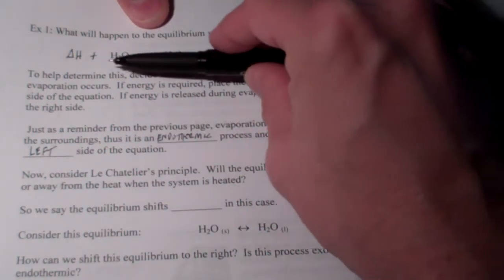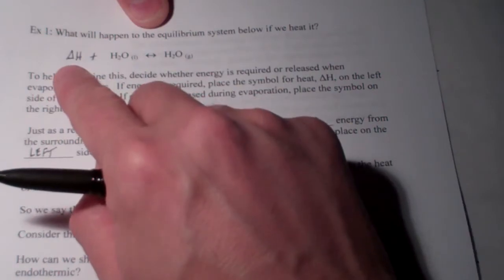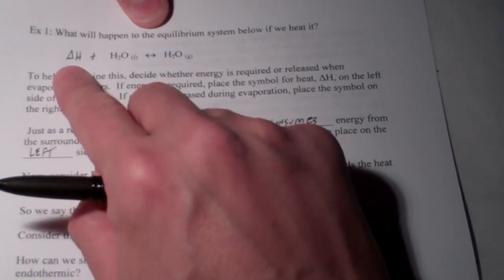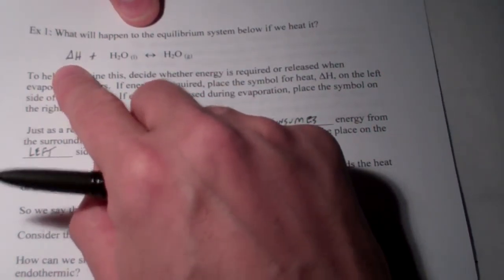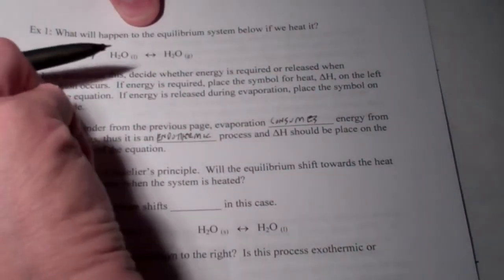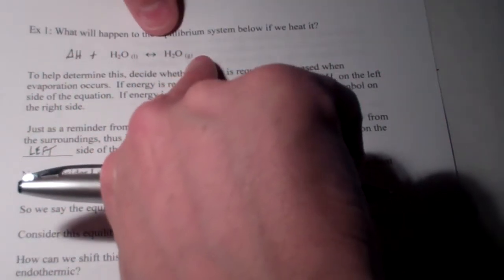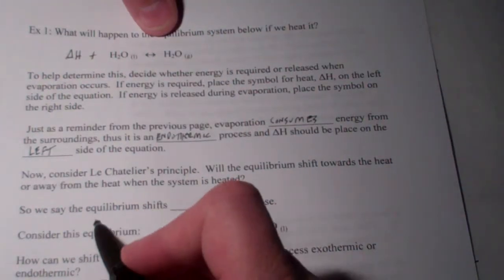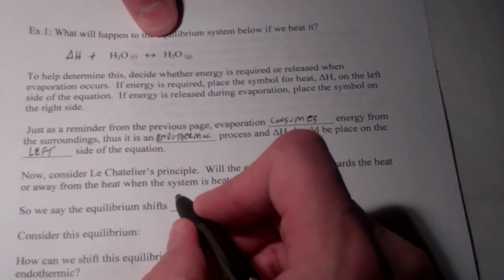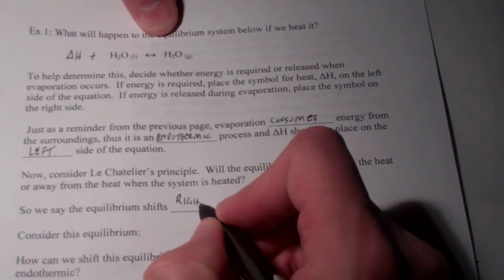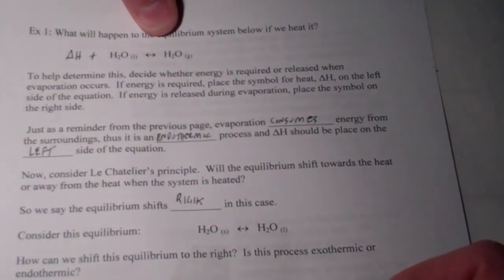Think about this. If heat is added to this system, will the equilibrium shift to the left and create more heat? Well, no. That will compound the problem, won't it? When heat is added to the system, the system will shift to the right to move away from the heat or to consume even more heat. So, we say that this equilibrium would shift to the right, and more gaseous water would be formed.